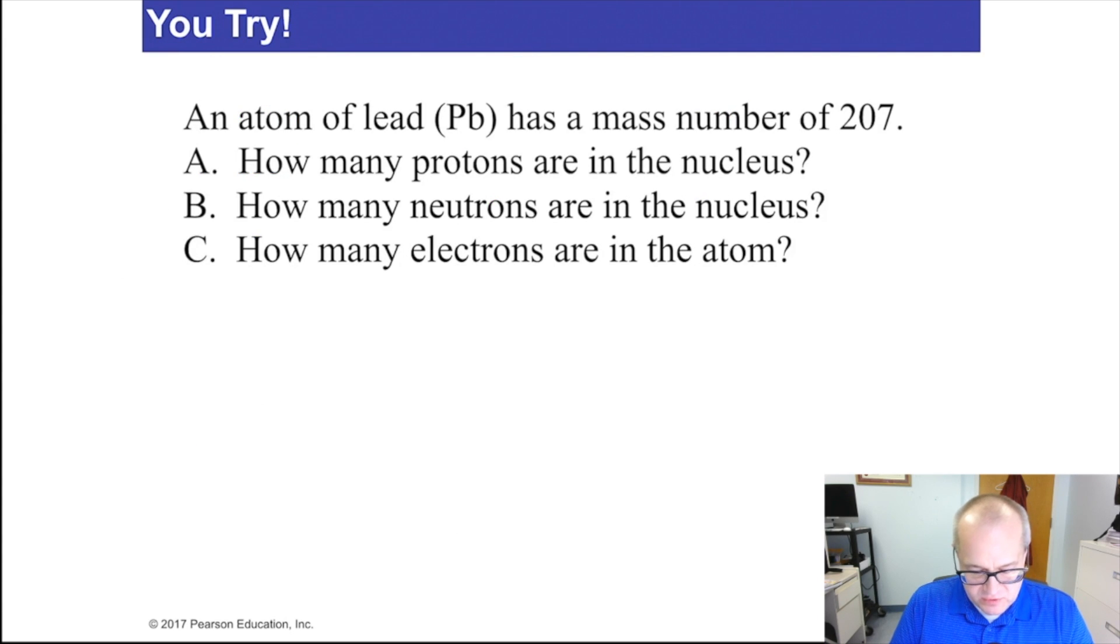Now you try. Here we have an atom of lead with a mass number of 207. How many protons, neutrons, and electrons are there? Pause the video, work it out yourself, and then restart when you're ready.